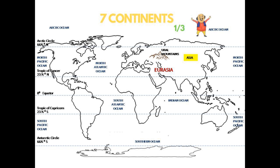The first continent we are going to see is Asia. It falls on the eastern hemisphere of Earth. It's the largest in size and covers one-third of the Earth's landmass. The Tropic of Cancer and Arctic Circle pass through this continent. On the west of Asia, there is the Ural Mountains, which separates Asia from Europe. The areas of Europe and Asia combined together is said as Eurasia.